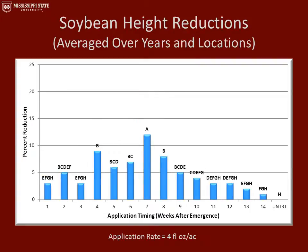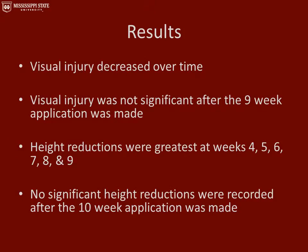This graph represents the soybean height reduction, averaged over all years and locations. On the y-axis we have percent reduction, and on the x-axis we have application timing. We saw the greatest amount of height reduction at week seven — about a 12% height reduction — and in the later application timings we saw no significant height reductions. Visual injury decreased over time, and was not significant after the nine-week application. Height reductions were greatest at weeks four through nine, with no significant height reductions recorded after the 10-week application.